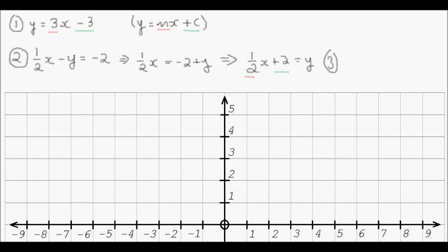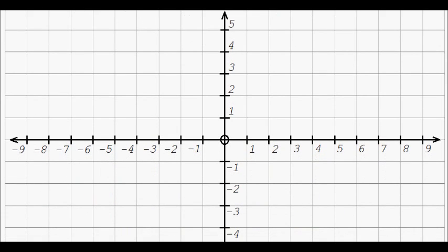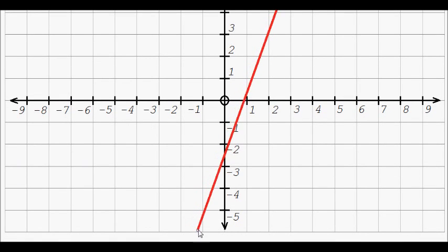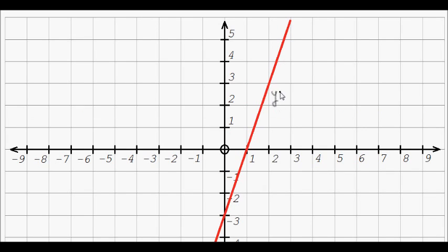Right, so let's graph now equations 1 and equations 3. So our first equation is 3x minus 3. And I'll graph that in red. So we see here that our y-intercept is minus 3. So our equation graphically is going to look like this. And I'll extend it further down. Make sure that we pass the y-intercept of negative 3, and we have a gradient of 3. So I'm going to label this one y equals 3x minus 3.